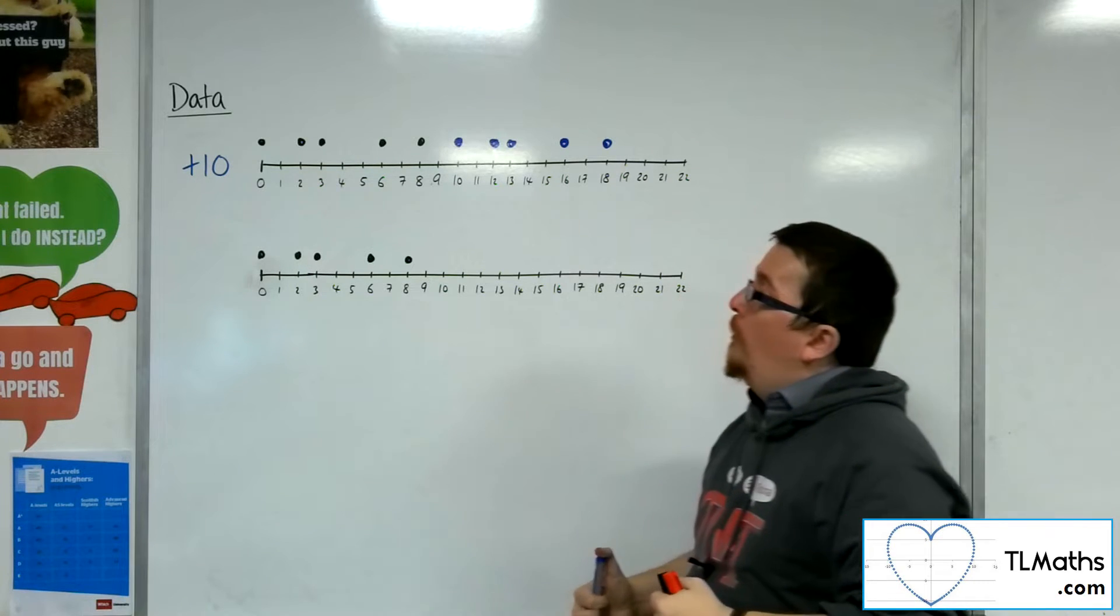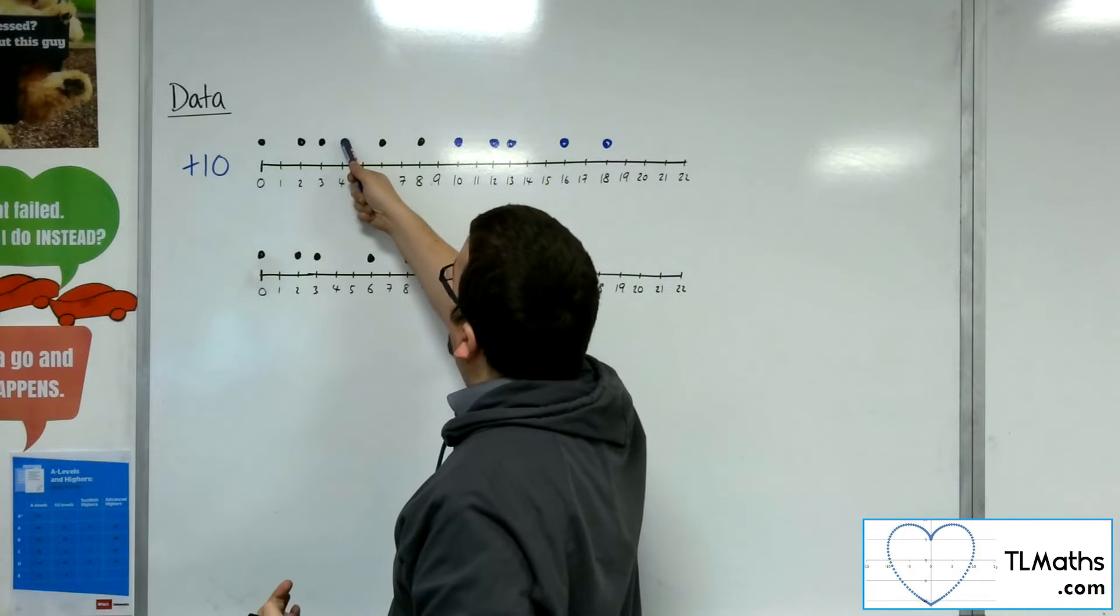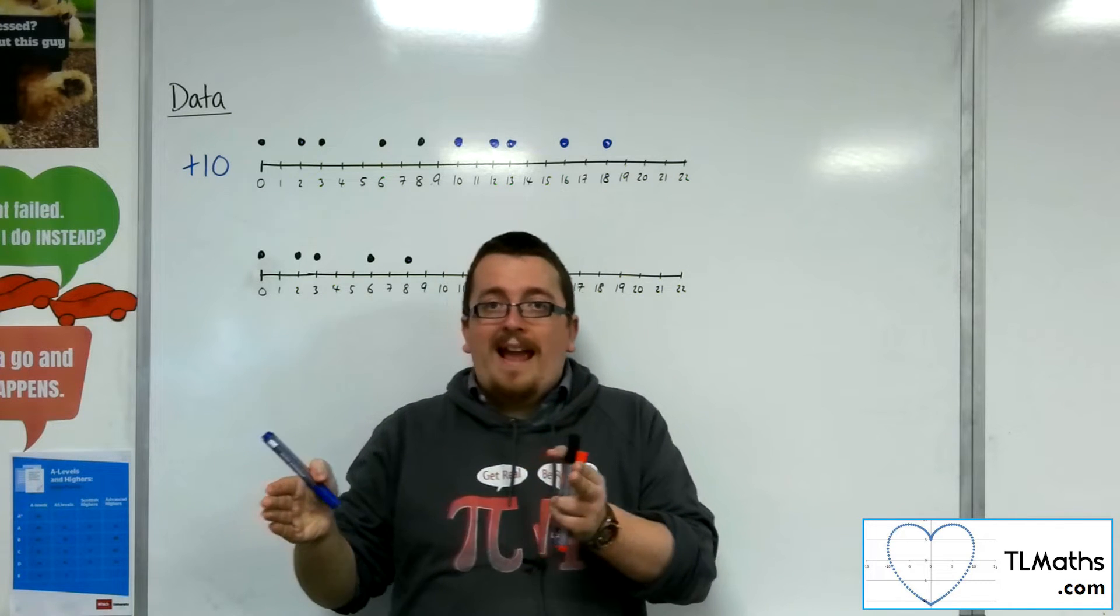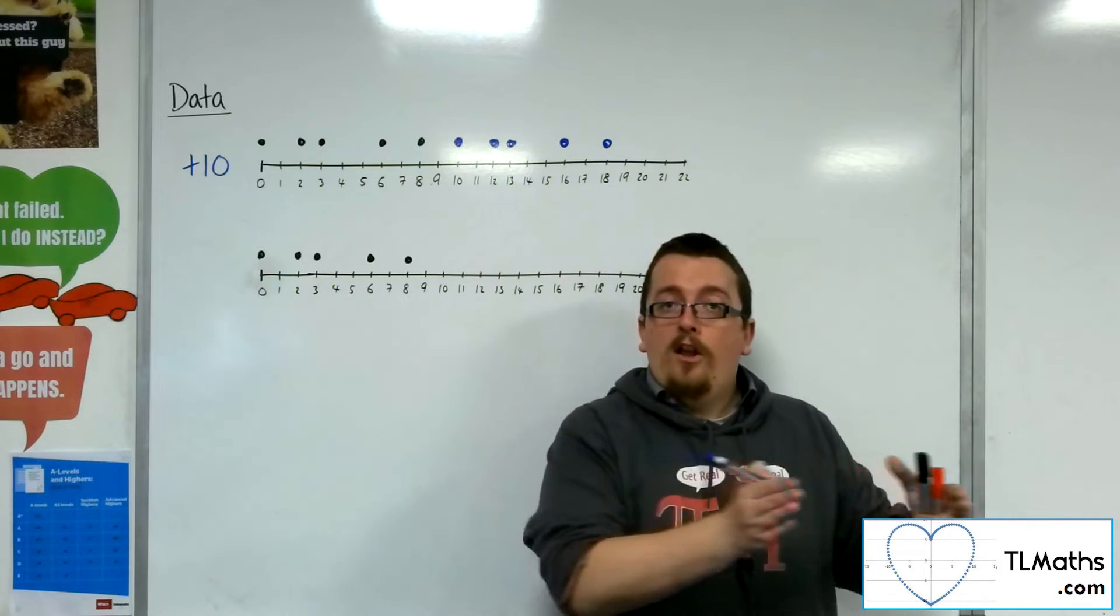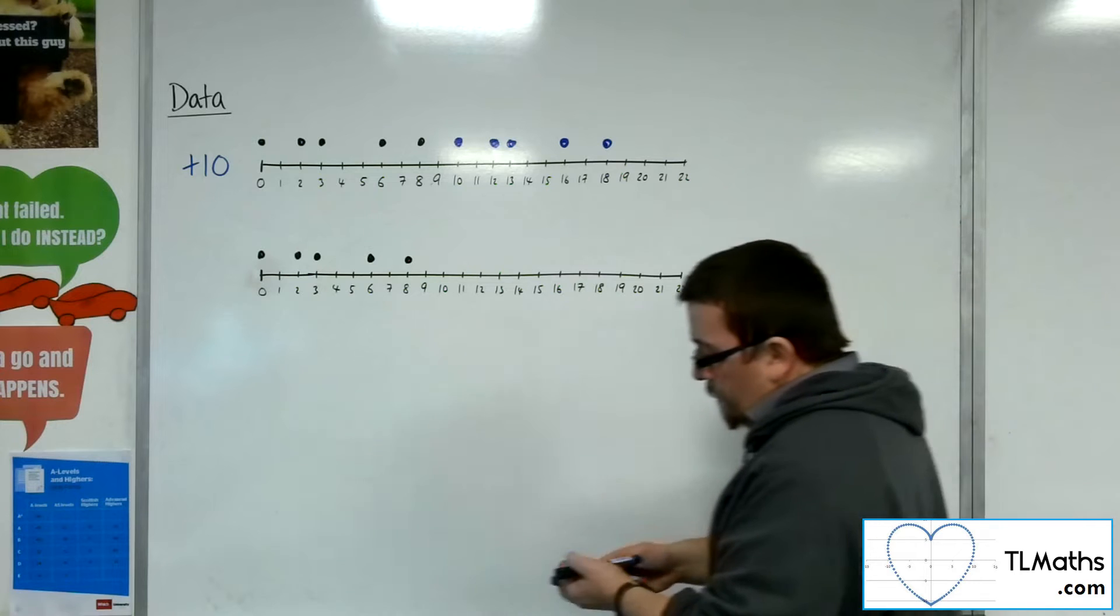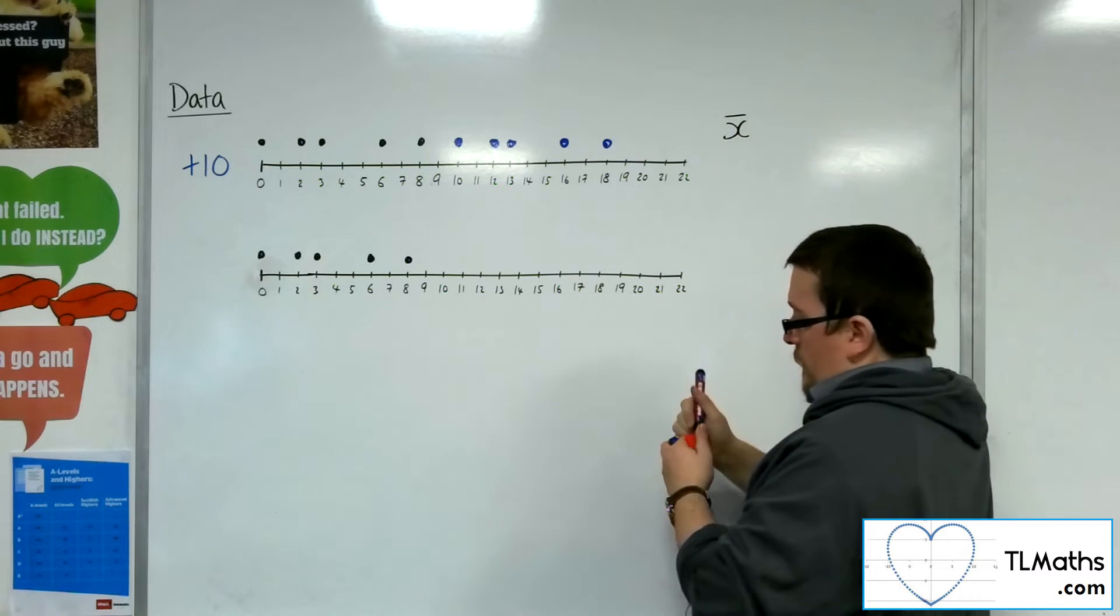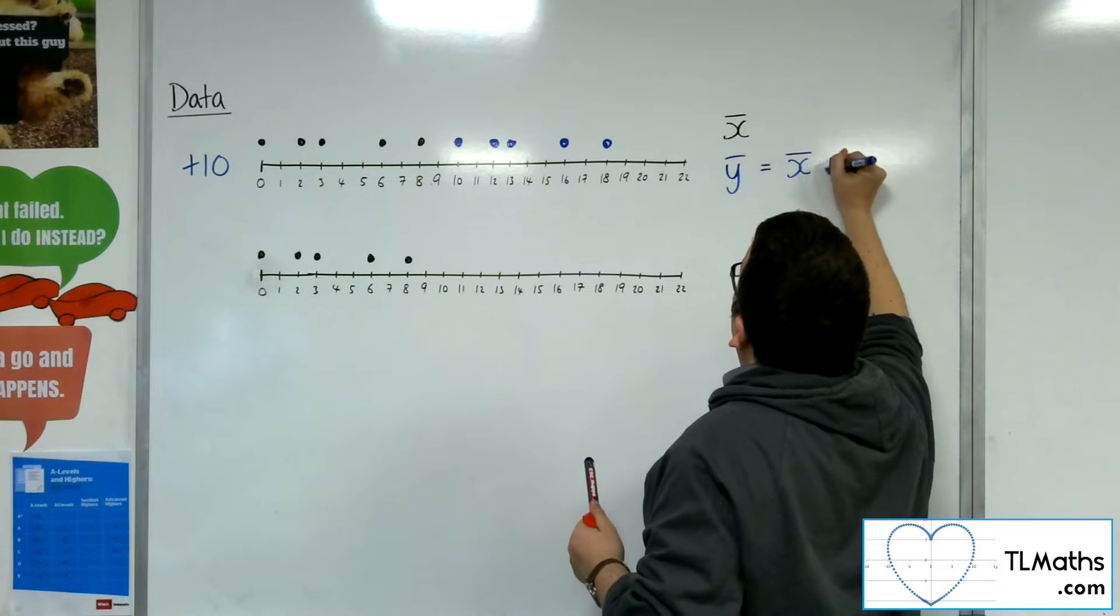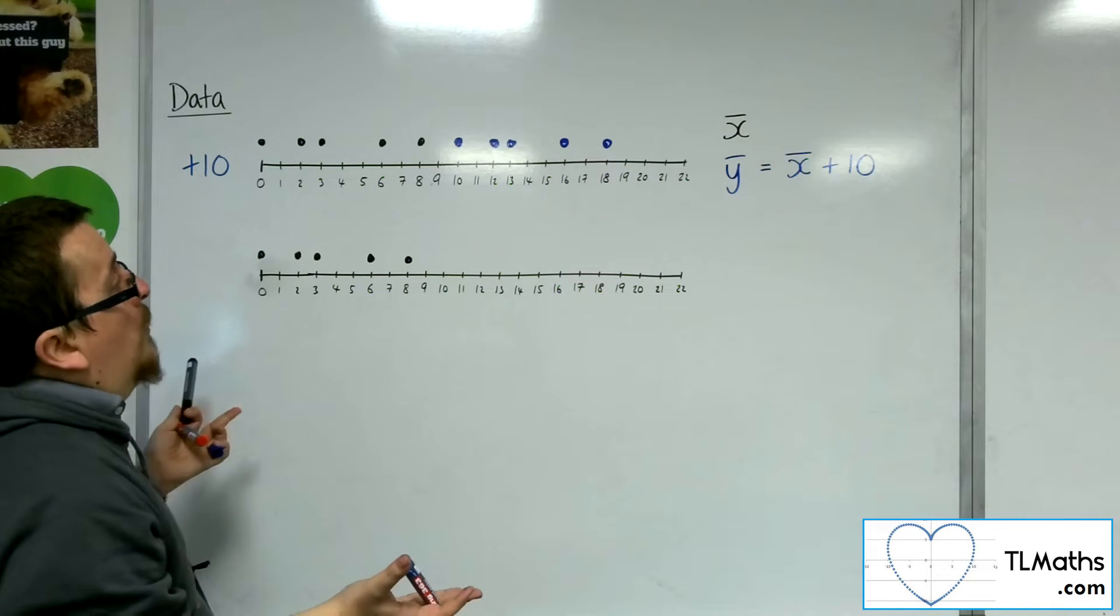So what we want to do is we want to think about what's happened to the mean. So the mean of the original set of data will be somewhere around here. The mean of the new set of data will be somewhere around here. So if I have a mean of this set of data and I add a number to all of those data points, then the mean will travel along with the data set. So whatever the mean was originally, so we will have this x bar, whatever that was originally, my new mean, let's call it y bar, will be equal to the old mean plus 10. That makes sense.